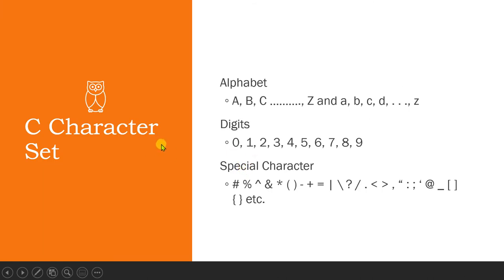To write a C program you need to learn the C character sets — the different characters used to write C code. These include alphabets, digits, and special characters. The alphabets are A to Z in both uppercase and lowercase. Digits are the ten decimal digits 0 to 9. Special characters are all the symbols you can see on your keyboard. You need to know which key to press for each special character to write your C code.